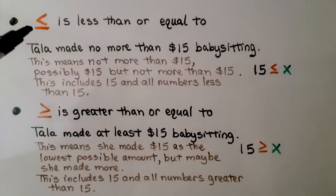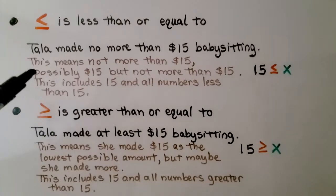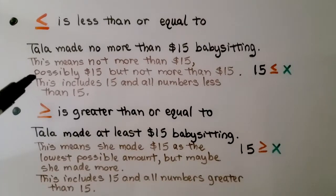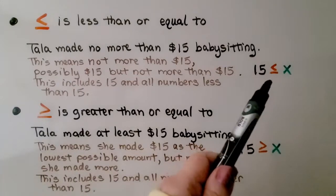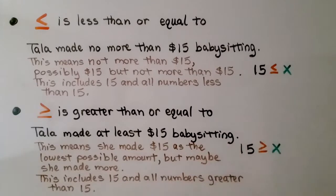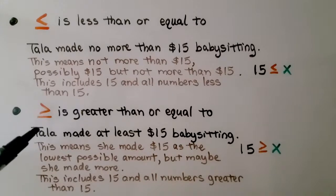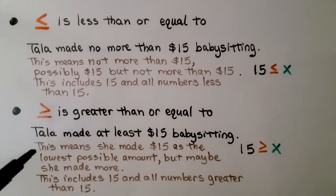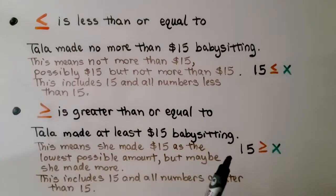The symbol 'less than or equal to': Tala made no more than $15 babysitting. This means possibly $15 but not more than $15 — it includes $15 and all numbers less than 15. We write: x ≤ 15, the amount she made. The symbol 'greater than or equal to': Tala made at least $15 babysitting, meaning $15 is the lowest possible amount but she may have made more. It includes 15 and all numbers greater than 15, written as x ≥ 15.